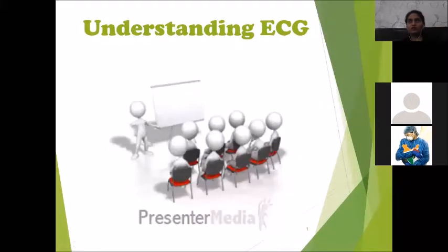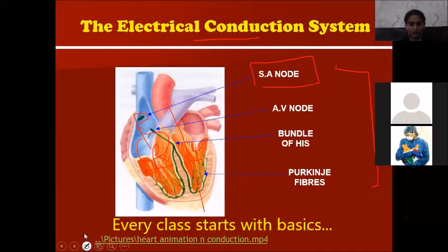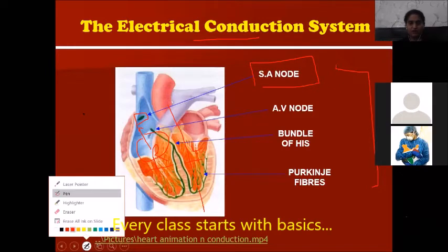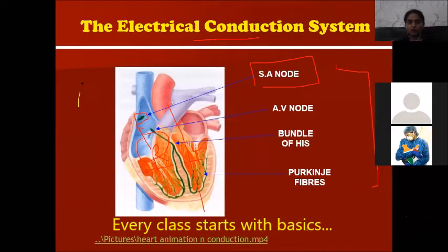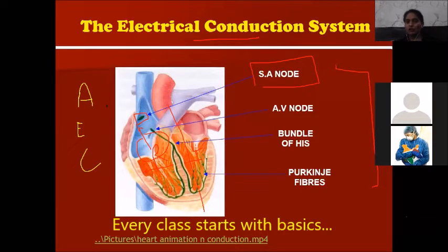ECG stands for electrocardiography. The properties which cardiac muscles possess can be remembered by the mnemonic A, E, and C — where A stands for automaticity, E stands for excitability, and C stands for conductivity.